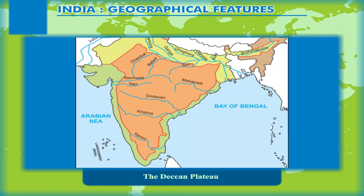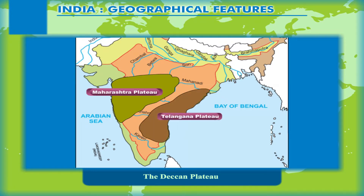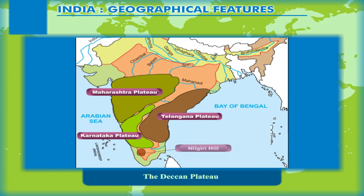Like the Central Highlands, the Deccan Plateau has also been divided into smaller subdivisions, including the Maharashtra Plateau in Maharashtra, the Telangana Plateau in Andhra Pradesh, and the Karnataka Plateau in Karnataka. The southern tip of the Deccan Plateau is marked by the Nilgiri, Annamalai, and Cardamom hills.